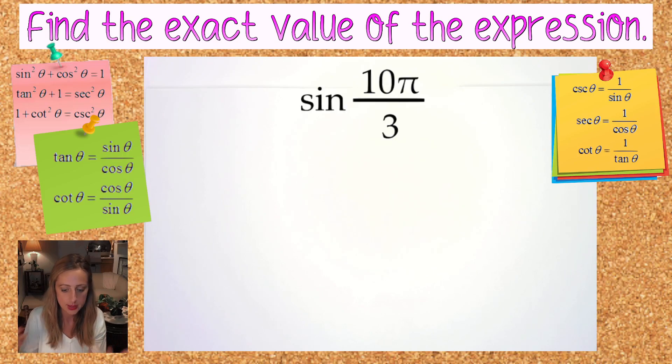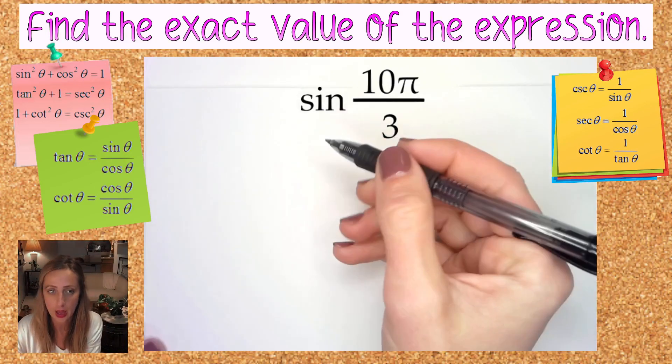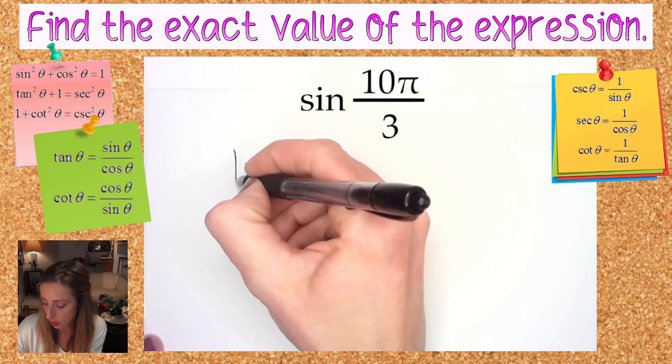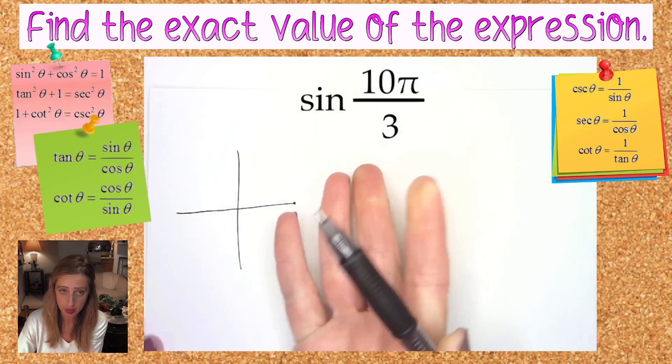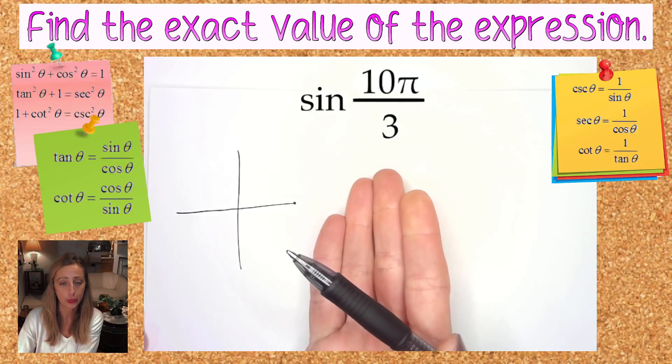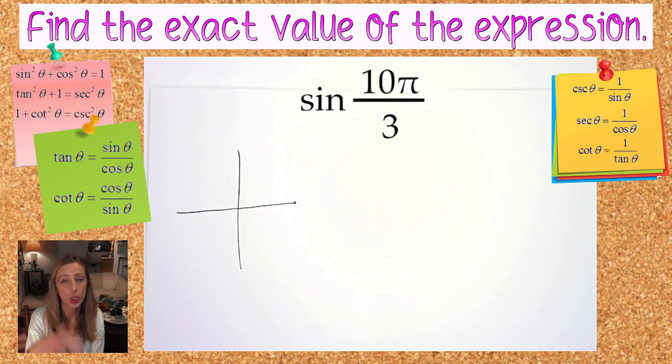Now although 10π over 3 is larger than the typical 0 to 2π window that we like to look at for the unit circle, 10π over 3, with it being reduced and having a denominator of 3, will be coterminal with one of the angles on the unit circle and it's just our job to figure out exactly where.